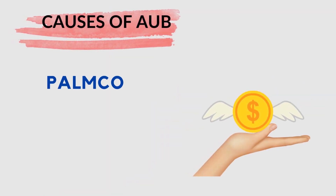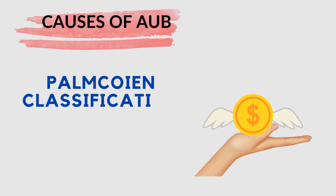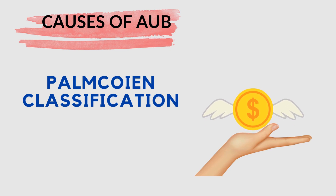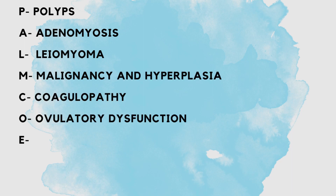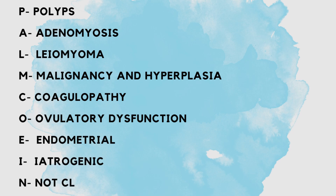Now let us look at the causes of abnormal uterine bleeding, classified under the mnemonic PALM-COIN. In this classification, P stands for polyps, A for adenomyosis, L for leiomyoma, and M for malignancy and hyperplasia.